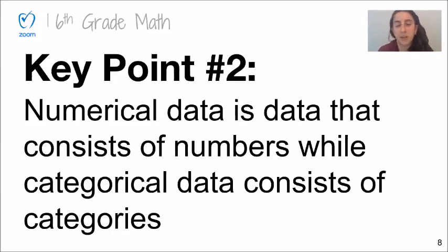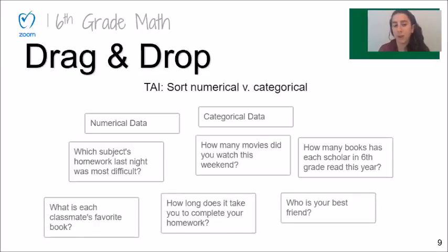This is really easy to identify when we're actually looking at the data, but I'm gonna test your knowledge a little bit further. Your job, when I say go, is to go back into Desmos and you should be on the screen that says TAI, sort numerical versus categorical. Your job is to take the questions that you see there and determine, are these questions going to produce numerical data, data in numbers, or categorical data? You'll drag and drop each question into the category you think it falls in. Your teacher is going to watch your work and narrate out the progress that you're making. Ready? Go!